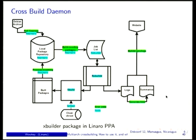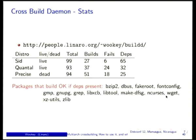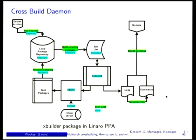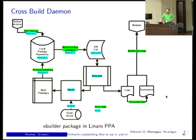Most recently, Thibault Gurker has been working on multi-arch cross toolchains, which are both built using multi-arch and can build things using multi-arch. To see what works and what doesn't, we have a cross-build daemon online. It's currently building about 300 packages from stable and quantal, giving us a pretty good idea of where we're at.